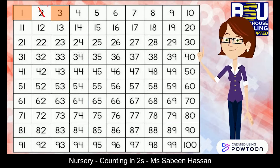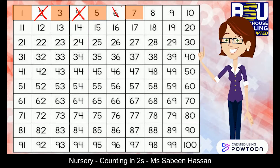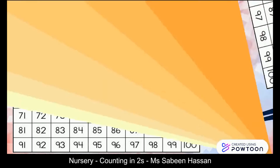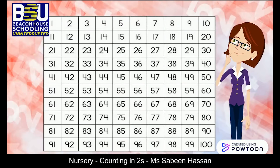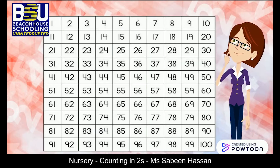Next, we'll skip number four and go to number five. Skipping number six, we'll reach number seven. Following the same sequence, we'll reach number nine and then number eleven.